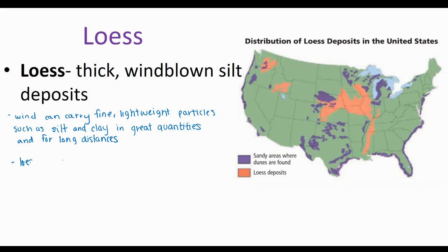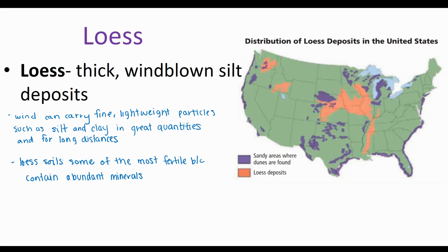These loess soils are going to be some of the most fertile because they contain a lot of minerals. Looking at the picture of the United States, the purple areas are sandy areas where you can find dunes. The coral color shows where you can find loess deposits. In Illinois we actually have a lot of loess deposits, so our soil is transported soil — it came from elsewhere. That's also why it is so fertile, because it was blown in from elsewhere, and loess soils are some of the most fertile.